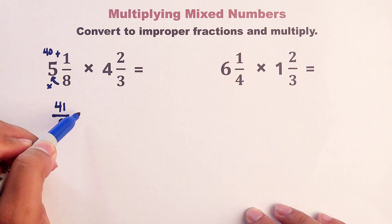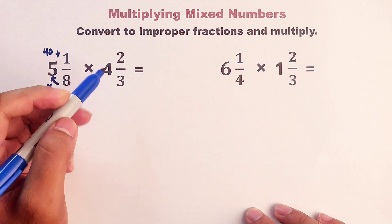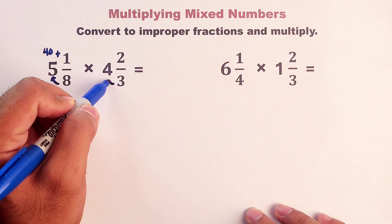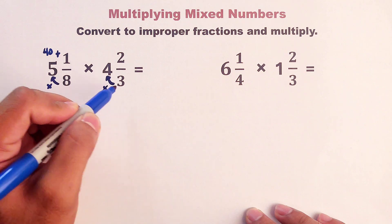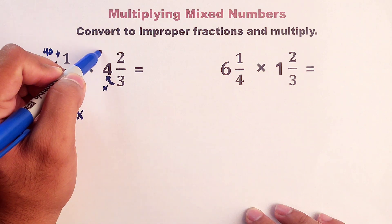Times, this 4 and 2 thirds must also be converted into improper fraction. Multiply these two numbers. This is equal to 12.